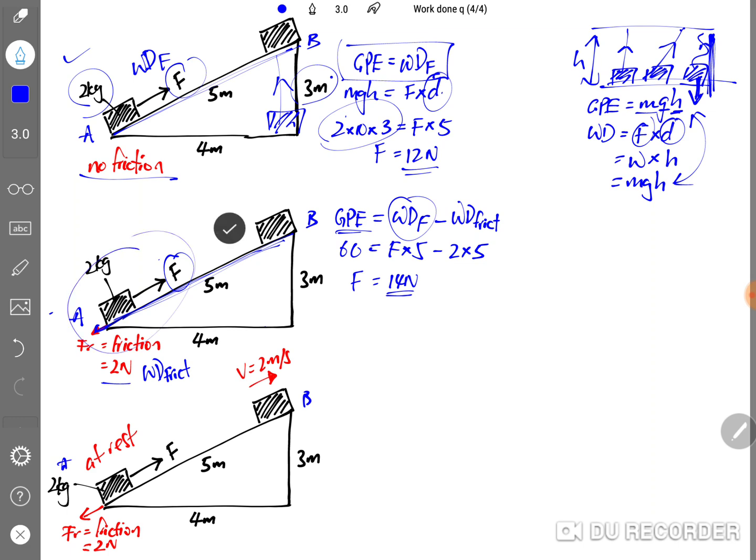And another way to check is, take a look at the resultant force acting on the box. Previously, you only need 12N, so the resultant force acting on the box will be the pulling force which is 14N minus away the friction, you still get back 12N.